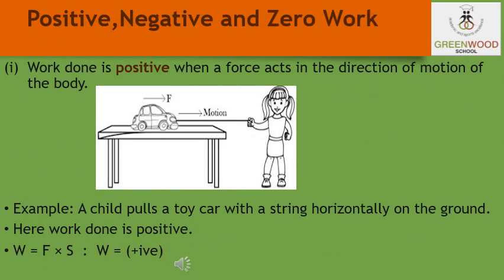When the force F and the displacement S are in the same direction — that is, the angle between the direction of force and displacement is zero — the work done will be positive, meaning work is done by the force. For example, a girl is trying to pull a trolley car towards herself, so the force is applied in the direction of motion. Therefore, the work done here is positive.